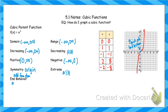For end behavior: as x approaches negative infinity, y is going down toward negative infinity. As x approaches positive infinity, y is going up toward positive infinity. That's a review of the vocab we've been using so far this year applied to the cubic parent function.